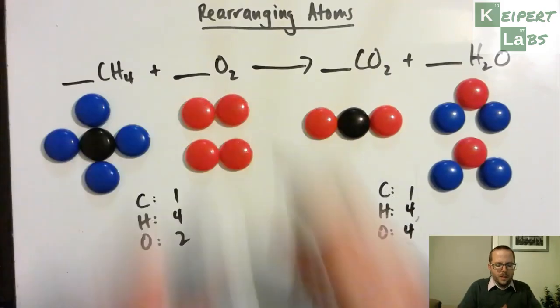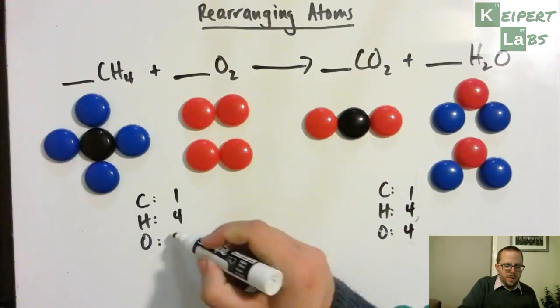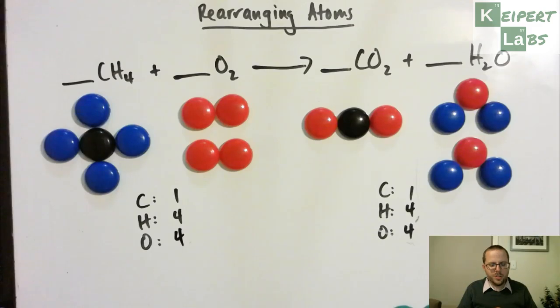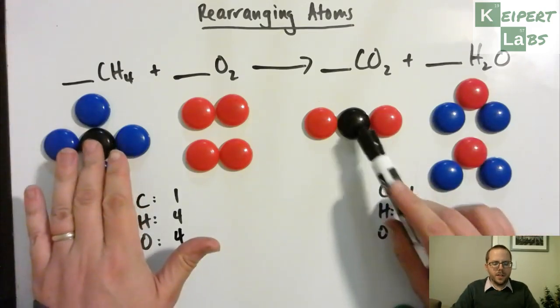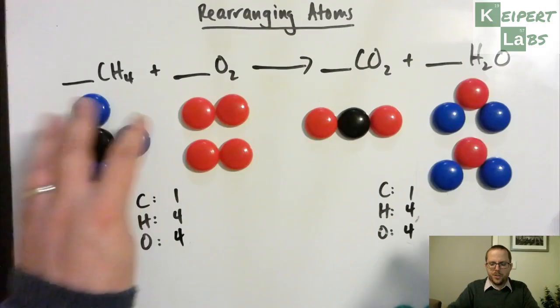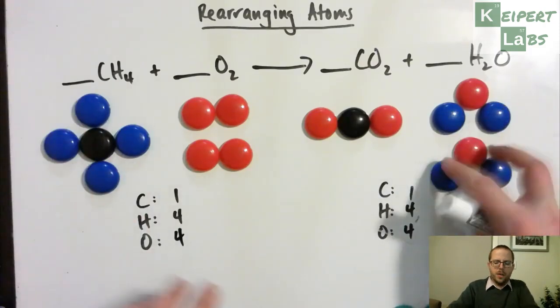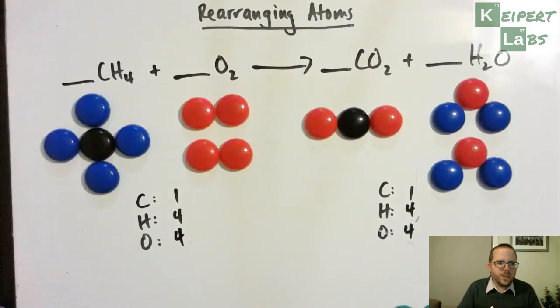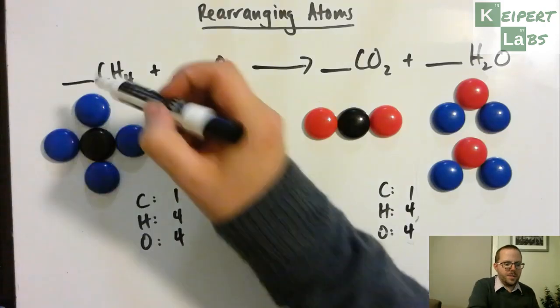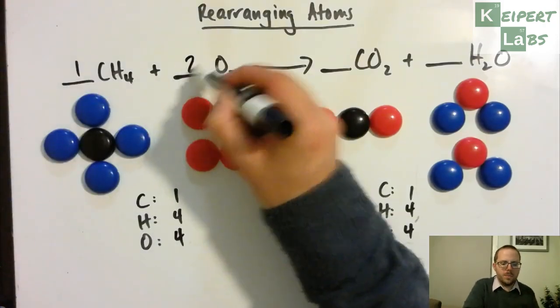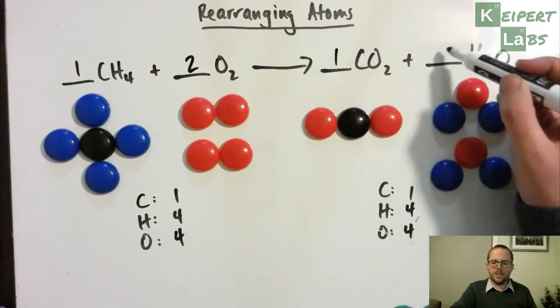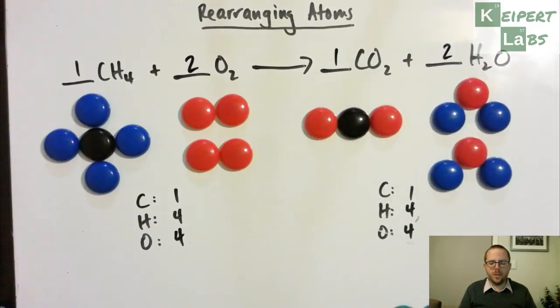So an additional O2 over here means I now have four oxygens. I still have one carbon on each side, so that's still balanced. I've got four hydrogens. So four blue, four blue, four red and four red. So it's balanced and now I can add in the coefficients in my equation to express that. So I've got one methane combining with two oxygens to form one carbon dioxide and two water molecules.